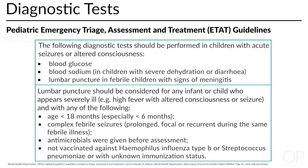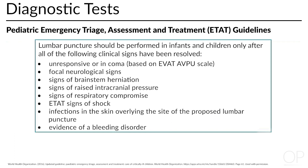Lumbar puncture should be considered in the following scenarios: any febrile child who appears ill and/or with signs of meningitis such as meningismus and headache; a complex febrile seizure; seizure in a febrile, unimmunized child; highly considering children less than 18 months of age, and absolutely in infants under 6 months; and children who presented with seizure and were started on antibiotics empirically for meningitis based on ETAT guidelines. Lumbar puncture should be deferred if the child has signs of increased intracranial pressure, altered consciousness, focal neurologic deficit, signs of shock, any evidence of bleeding disorder, or an infection over the site of a lumbar puncture.